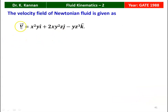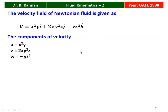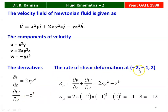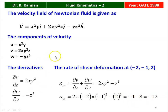From the velocity field: u = x²y, v = 2xy²z, w = −yz³. ε_yz = ∂v/∂z + ∂w/∂y = 2xy² + (−z³). Substituting x = −2, y = 1, z = 2: ε_yz = 2(−2)(1)² − (2)³ = −4 − 8 = −12. This is the answer.